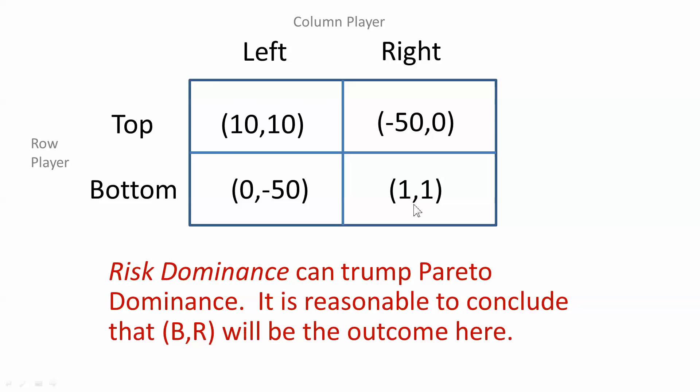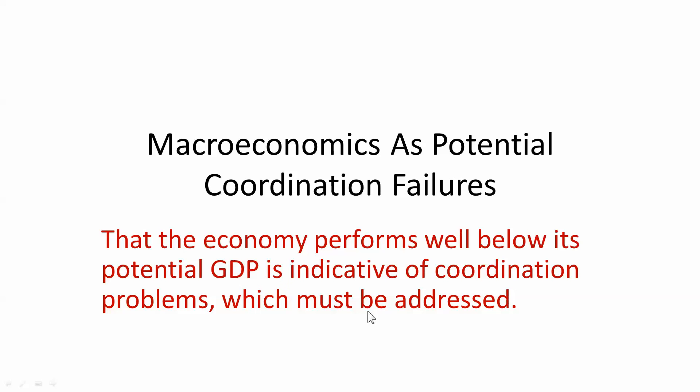Macro is beset with these potential demand failures. A firm doesn't produce because it's not sure there's enough demand. People don't buy things because they're not sure they're going to have enough income to pay for them in the future. Those coordination problems persist. This little demonstration shows why that might be in equilibrium.